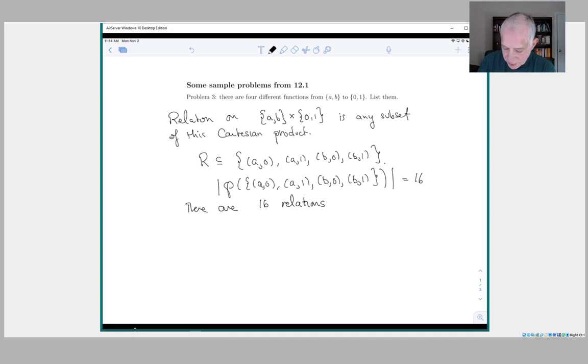So only a few of those relations are actually functions. What is the additional condition that has to happen if we're going to have a function? Well, remember the rule if we draw a picture. Here's a picture. Here's AB and here's 01.